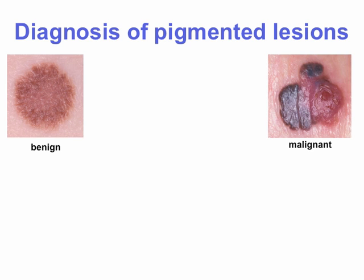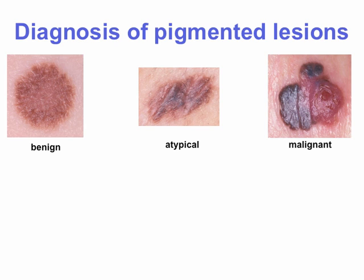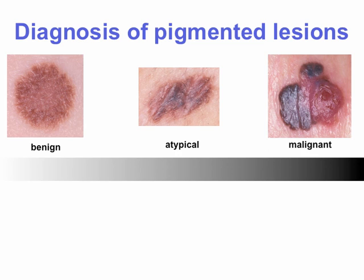Let me close with a few general remarks on histology and pigmented lesions. With the diagnosis of pigmented lesions, we have benign lesions like the junctional nevus, malignant lesions like melanoma, and something in between which we call atypical or dysplastic nevi. White meaning benign, black meaning malignant — but there's a spectrum between black and white, from light gray to gray to dark gray to black. The atypical ones are exactly in the gray zone.